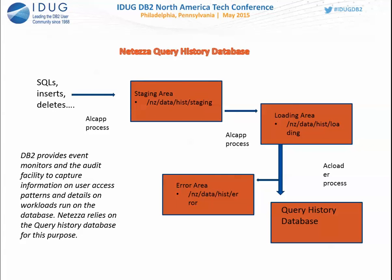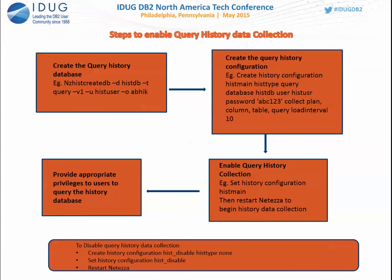To set up the history database: create the query history database using a special utility, then enable configuration specifying what to collect (plan, column, table data, etc.) and how often to load (e.g., every 10 minutes). Grant users access to the database so they can view all monitoring and performance data. Netezza also comes with a tool called NC Portal, which provides a GUI interface for viewing all monitoring data — very easy to use with all monitoring data at your fingertips.